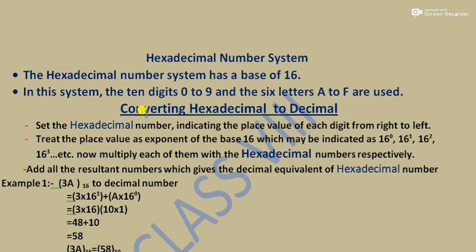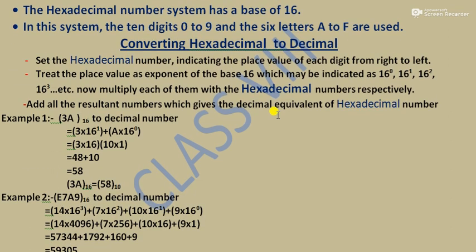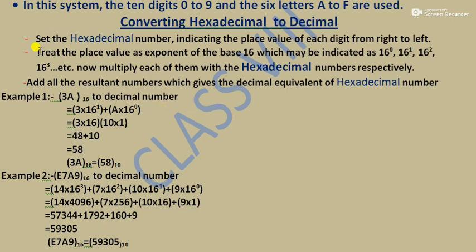Now, how do we convert hexadecimal to decimal? The process is the same: set the hexadecimal number indicating the place value of each digit from right to left, treat the place value as an exponent of base 16, multiply each digit by the corresponding power of 16, then add all the resultant numbers to get the decimal equivalent.